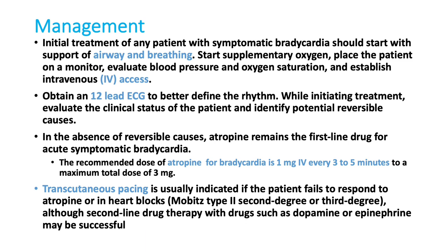When we see a case of bradycardia — whether due to hyperkalemia or any other cause — the initial response of the ER physician is to give atropine. Once significant bradycardia is identified, before looking for causes, prepare the crash cart and give atropine. The normal dose is 1 mg IV push; repeat every 3 to 5 minutes, with a total dose up to 3 mg. However, atropine will not work in heart blocks or if there is a secondary cause like tension pneumothorax, cardiac tamponade, or hyperkalemia.